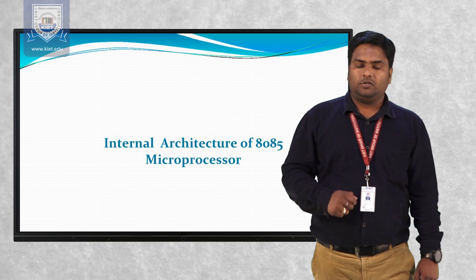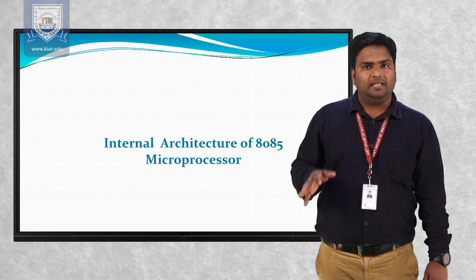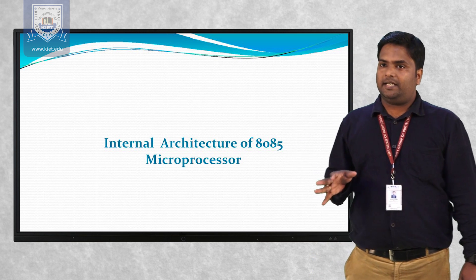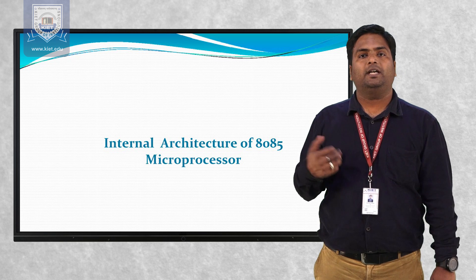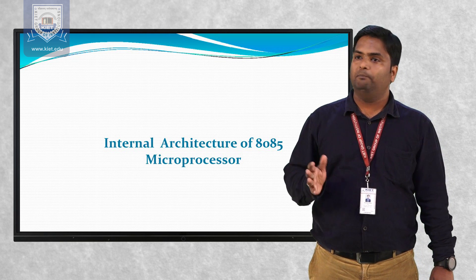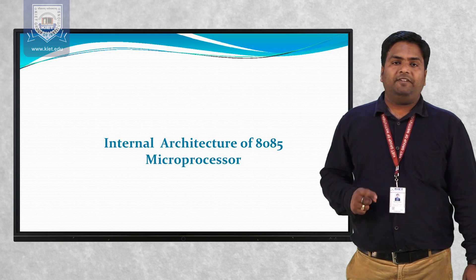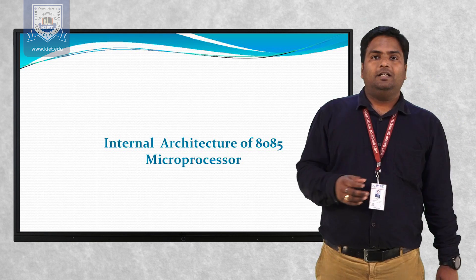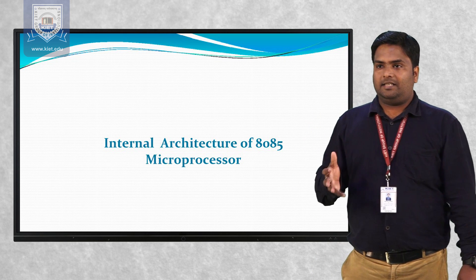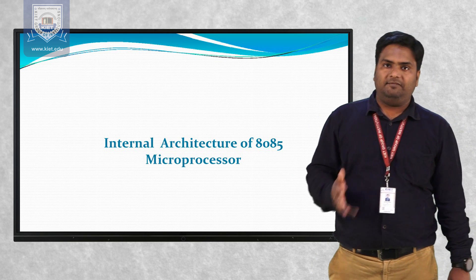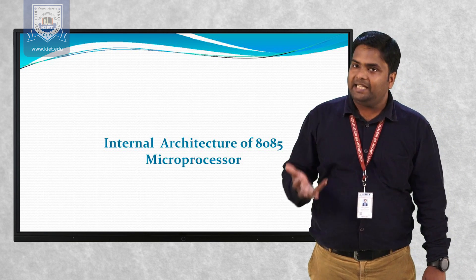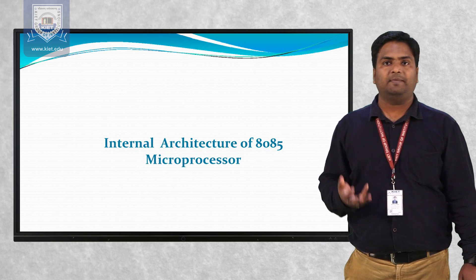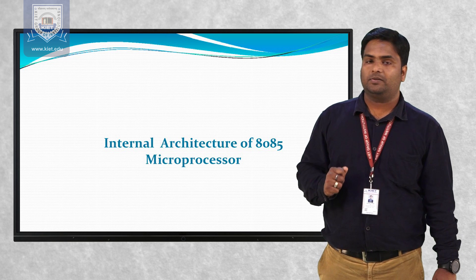Now we will start the internal architecture of 8085. Before starting, some important characteristics of 8085 must be clear. The 8085 microprocessor was developed by Intel, and it is basically an 8-bit microprocessor. The address line used to access this microprocessor is of 16 bits.